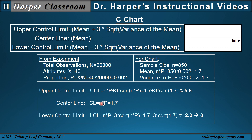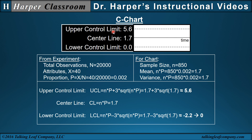For the chart, the centerline is the mean, 1.7. The upper control limit is the mean plus 3 times the square root of the variance of the mean — 1.7 plus 3 times the square root of 1.7 — which is 5.6. The lower control limit is 1.7 minus 3 times the square root of 1.7, which turns out to be negative 2.2. But a negative value is always replaced with zero, because the P-chart and C-chart can never have a lower control limit less than zero. So these values define the C-chart: 5.6, 1.7, and zero.